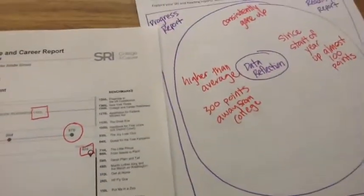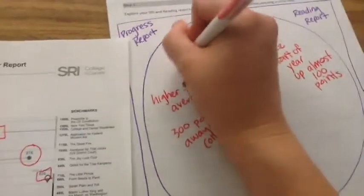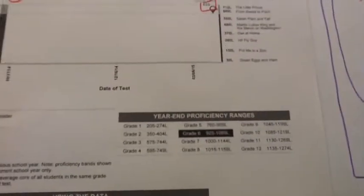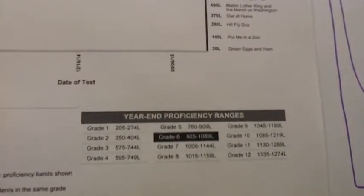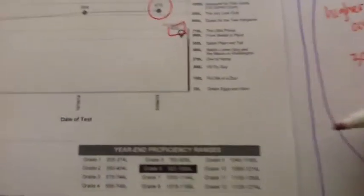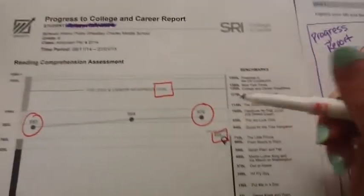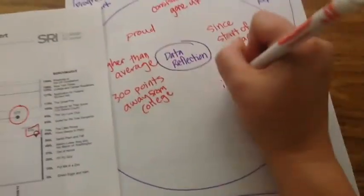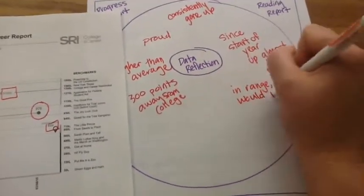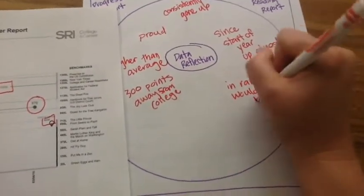I also think about how this report makes me feel. And I feel pretty proud of my growth. So I'm going to add proud. I also look here at the year-end proficiency range. And I see that by the end of the year, I should be at a 925 to a 1080. And I'm at a 976. So I'm in the range, but I'd rather be at the top of the range. So I'm going to put in range, would rather be higher.